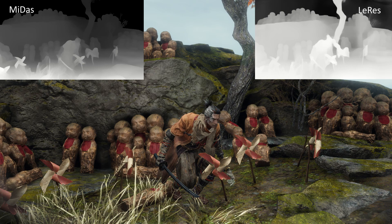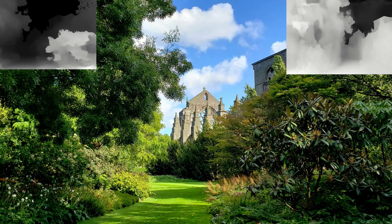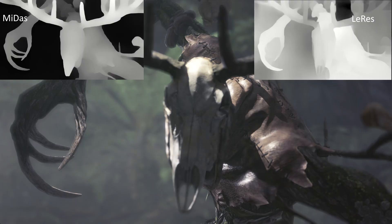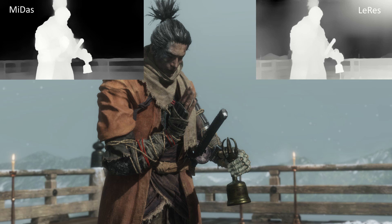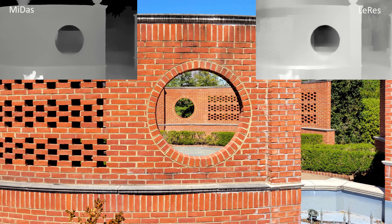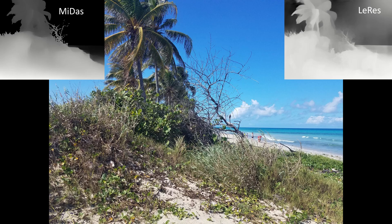So does that mean that LeRes is better than Midas and you should always use it? I would say no. As with other ControlNet modules, depth is also a balance between getting the particular composition you want and overfitting your map and getting an ugly mess. If you have too many details on your map, that is going to make it harder to find that balance. In general, if the details you want to capture are relatively close to the camera and you don't care much about the background, Midas is the way to go. On the other hand, if you care about details further away, like having windows on buildings captured accurately, LeRes is a better choice. LeRes is also better for capturing fine details on particular subjects like hair and plants, which Midas really struggles with.